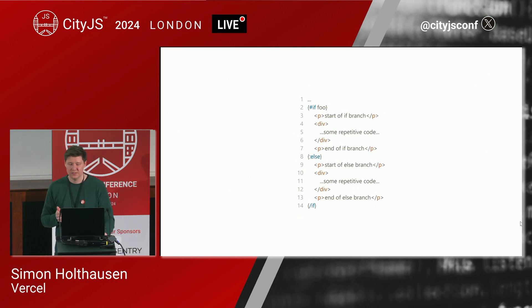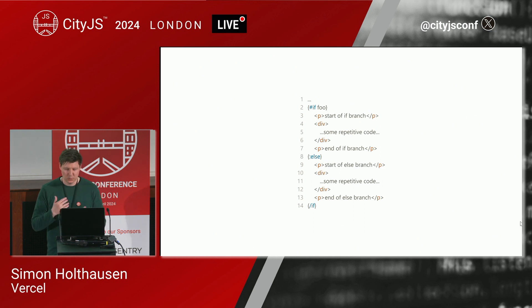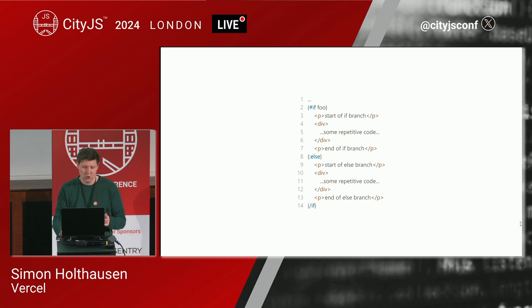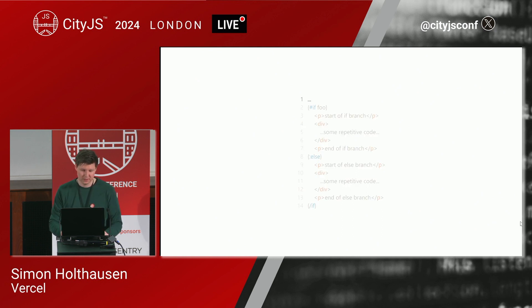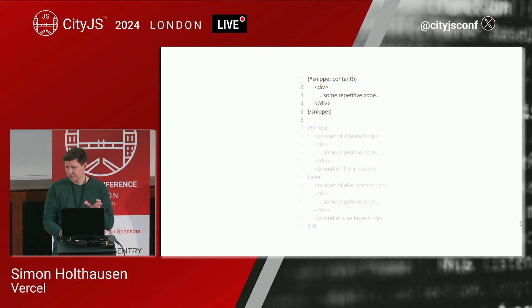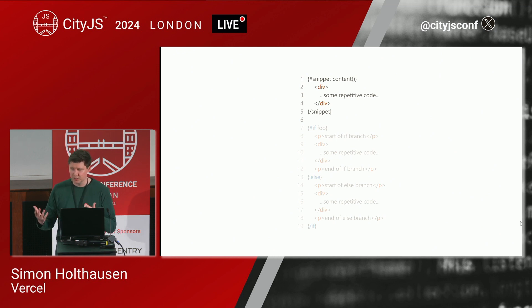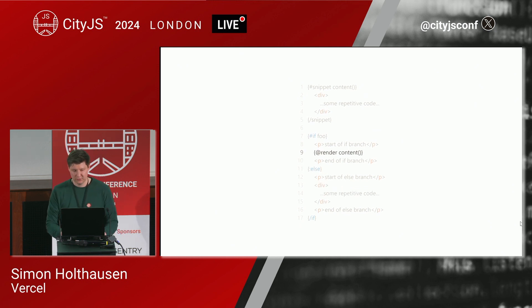The last big addition to Svelte 5 is the new Snippets API. Snippets allow you to define template sections of a component that can be reused and rendered wherever you want. They're a bit like the little brother of full-blown Svelte components. We can extract repetitive code from an if block into a snippet and render it in both branches. A snippet is defined with #snippet, the snippet name, and possibly some arguments — a bit like a function definition — followed by the markup to be rendered. To render it, we use the @render tag and reference the snippet, invoking it like a function.